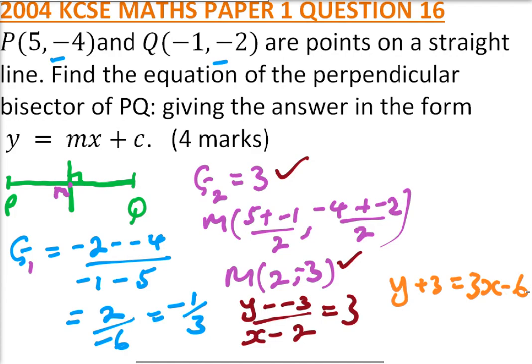Take 3 to the other side, we get y = 3x - 6 - 3, which is y = 3x - 9. That is the equation of the perpendicular bisector of PQ. That's how we work it out.